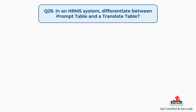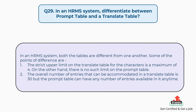Question number 29: in an HRMS system, differentiate between a prompt table and a translate table. The answer is, both tables are different from one another. The strict upper limit on the translate table for characters is a maximum of 4, whereas there is no such limit on the prompt table. The overall number of entries in a translate table is 30, but the prompt table can have any number of entries available at any time.